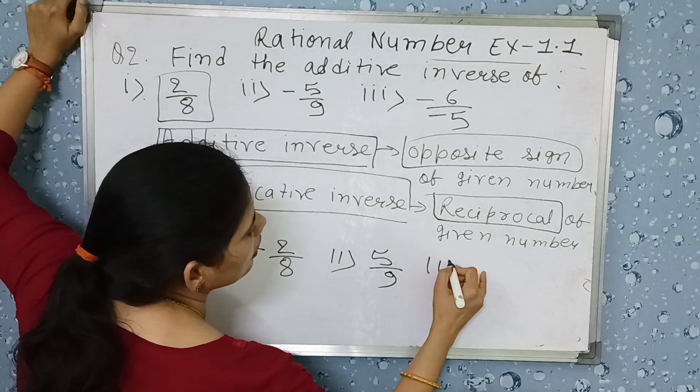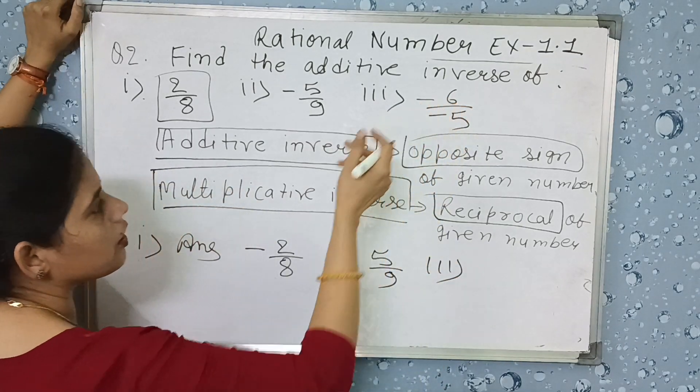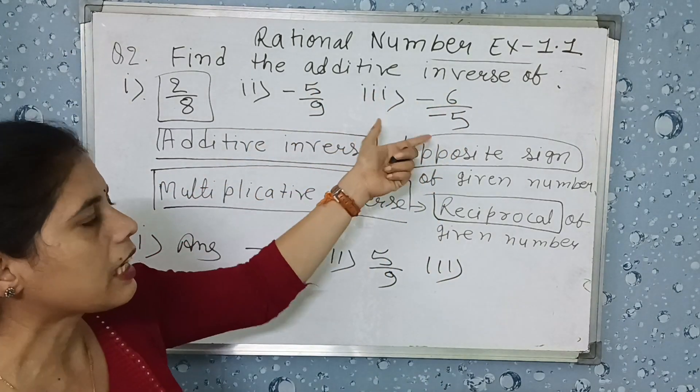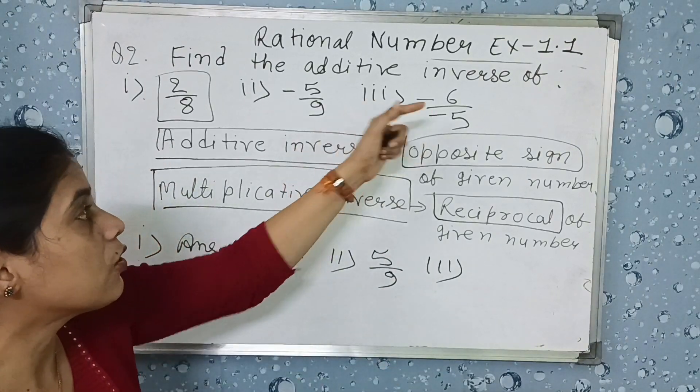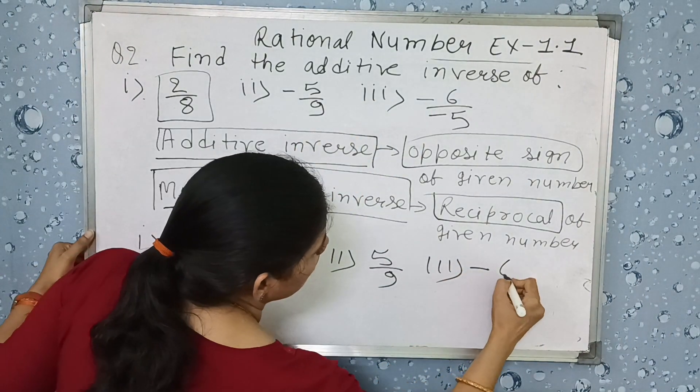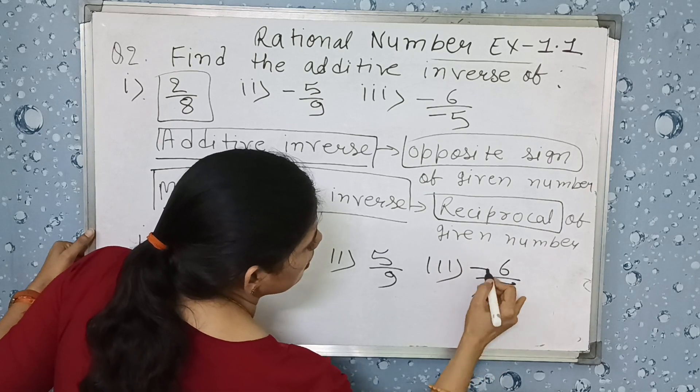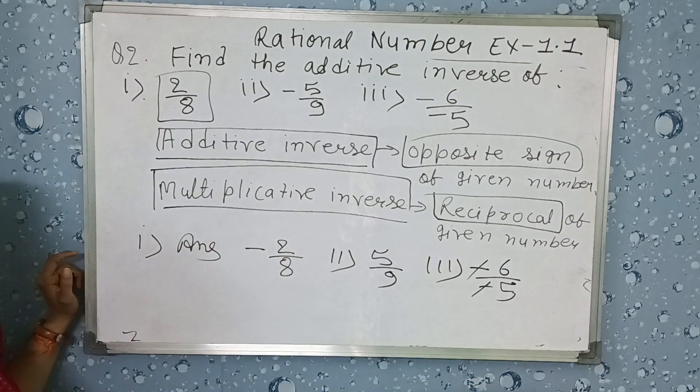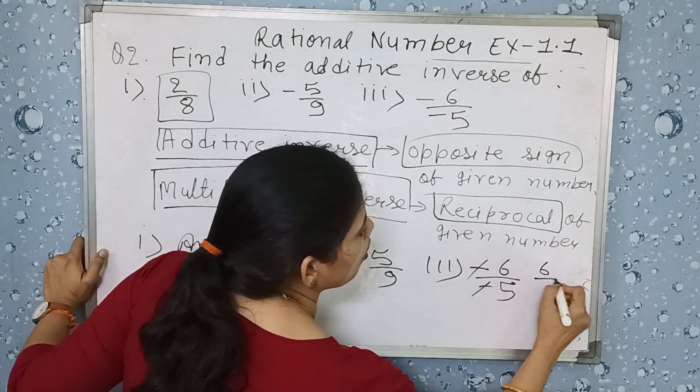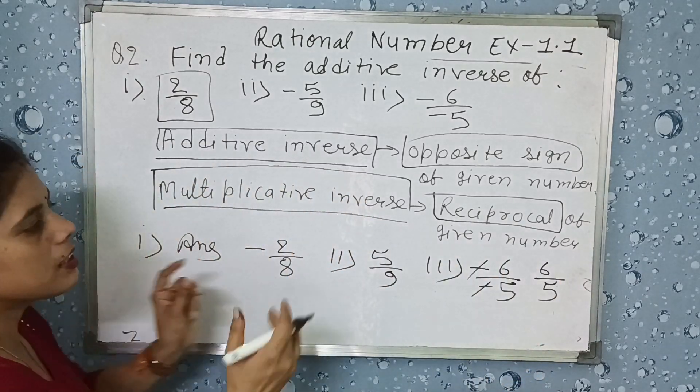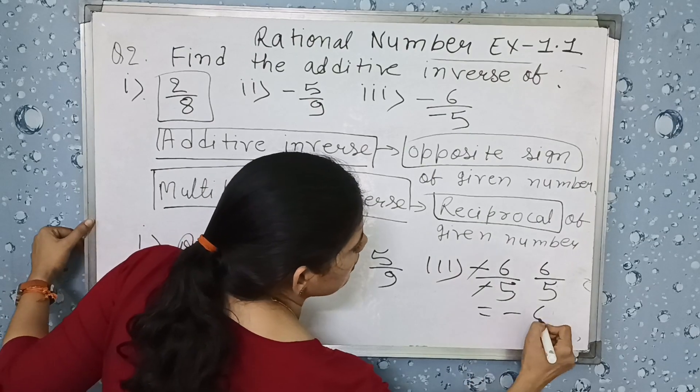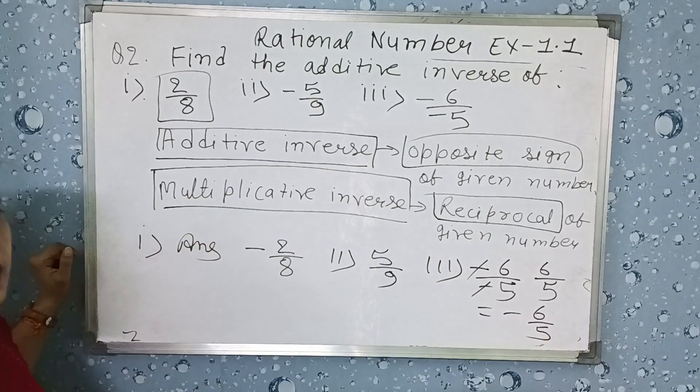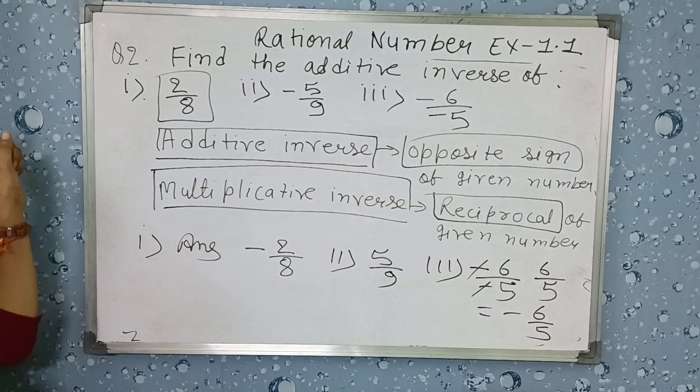The third one, if you will ask that both signs are negative, so is it positive rational number or negative rational number? First we will simplify this. Minus six minus five, both signs can be cancelled, so this is the original one, 6 by 5. It is a positive rational number, so the answer will be minus 6 by 5.